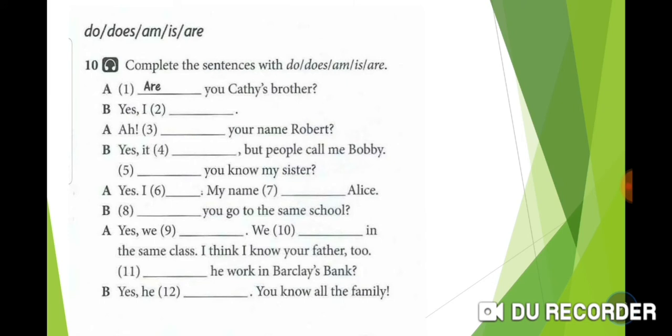Complete the sentences with do, does, am, is, or are. Number 1: Are you Kathy's brother? In present simple tense, we start questions with the helping verb do or does. But with verb to be—is, am, are—they don't need a helping verb. The verb to be is self-sufficient and doesn't need help, whether in interrogative or negative sentences. So: Are you Kathy's brother? Yes, I am.